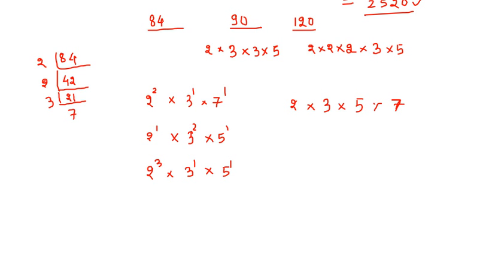The highest power of 2 is 3. The highest power of 3 is 2. The highest power of 5 is 1 and the highest power of 7 is also 1. So our final answer will be 2 to the power 3 (which is 8), multiplied by 3 to the power 2 (which is 9), multiplied by 5 to the power 1 (which is 5), multiplied by 7 to the power 1 (which is 7).